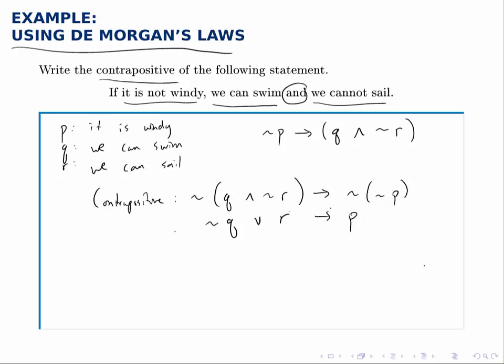This is an illustration of where converting this English statement into symbols helps a lot because we can use these consistent rules. And now we have this symbolic contrapositive and we can rewrite that in terms of our original statements.